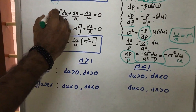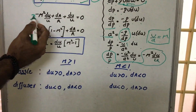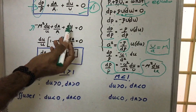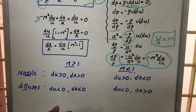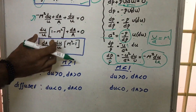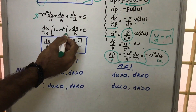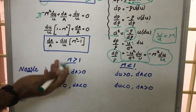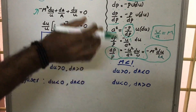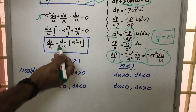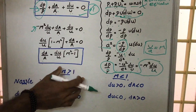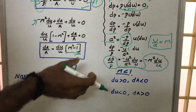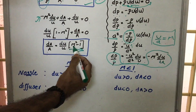Substituting dρ/ρ equals minus M²·(du/u) into the first equation: minus M²·(du/u) plus dA/A plus du/u equals zero. Taking du/u as common: du/u·(1 minus M²) plus dA/A equals zero. The final area-velocity relation is: dA/A equals (du/u)·(M² minus 1), which relates the change in area to the change in velocity through the Mach number.